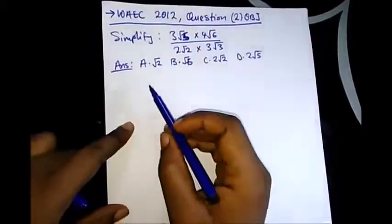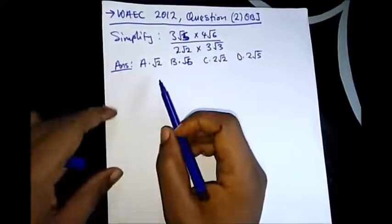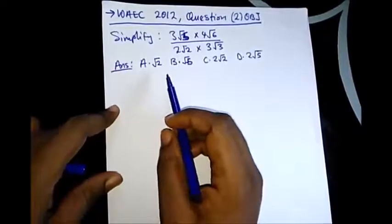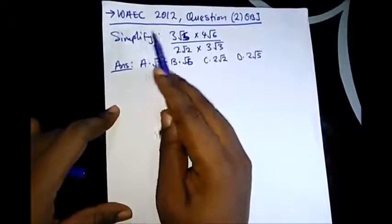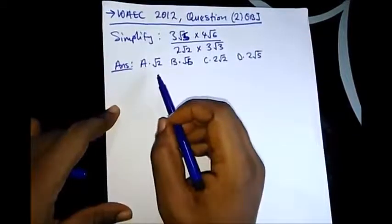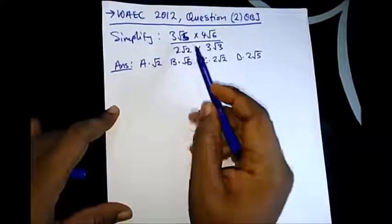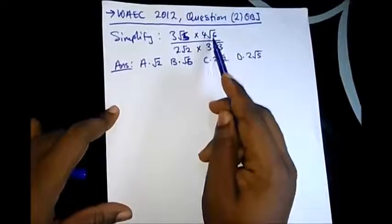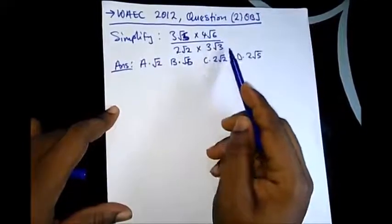Hello viewers, welcome to Destined to Win tutorials and projects. In this section we're going to be treating WAEK past questions on surds. For this example we have WAEK 2012 question 2, an OBJ question, and it says simplify 3√5 × 4√6 divided by 2√2 × 3√3.